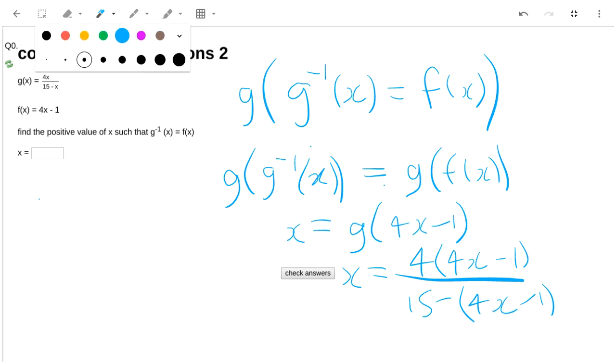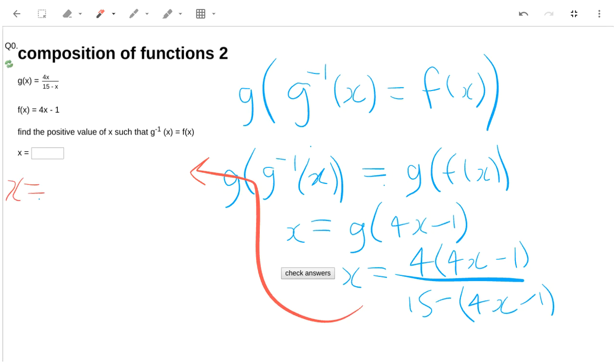Okay, I need to move up to the left hand side. So I'm just going to keep going over here. So that's going to give me x equals 16x minus 4 divided by 15 minus 4x plus 1.